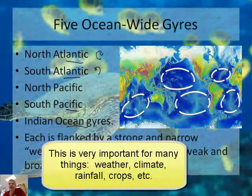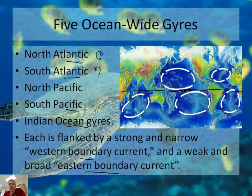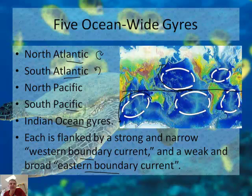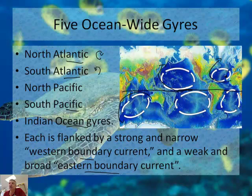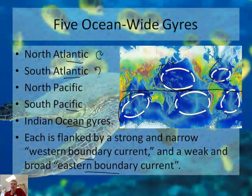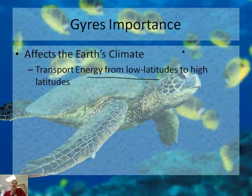If you think about that, we've got energy at the low latitudes — roughly at the equator — and it's pushing energy up higher, basically warming up the northern latitudes. If you did not have these gyres, you'd likely have an ice age or something like that. The energy is being transported north.